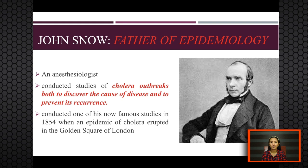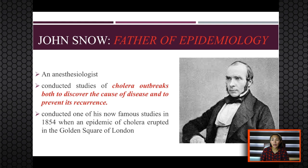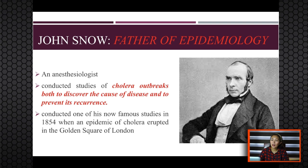In his first investigation, Snow determined where persons with cholera lived and worked, then marked each residence on a map of the area. This type of map is now called a spot map because it shows the geographic distribution of cases — where people with cholera are found or situated.